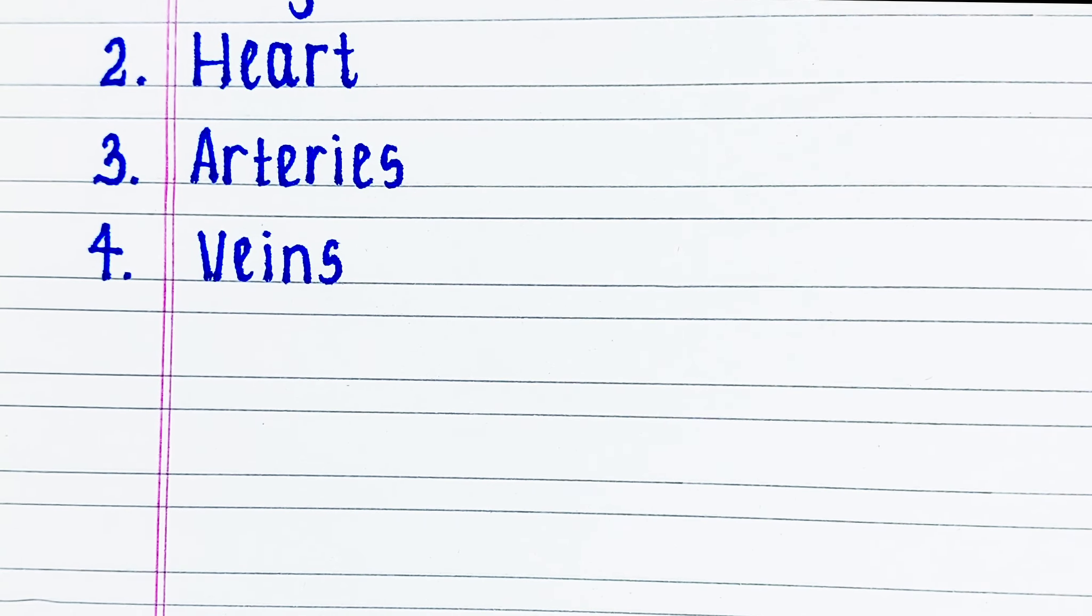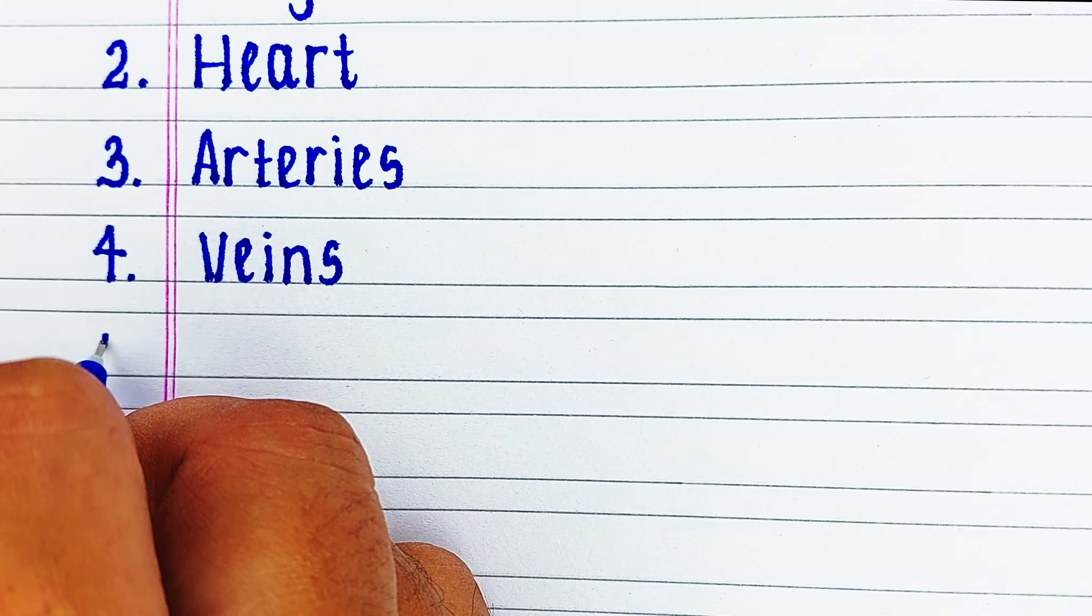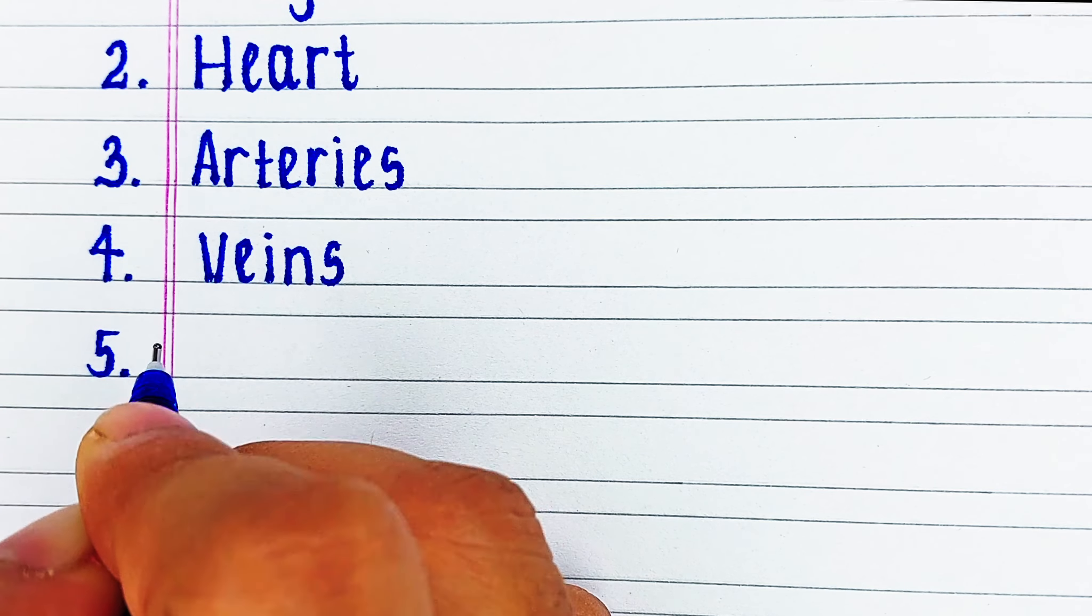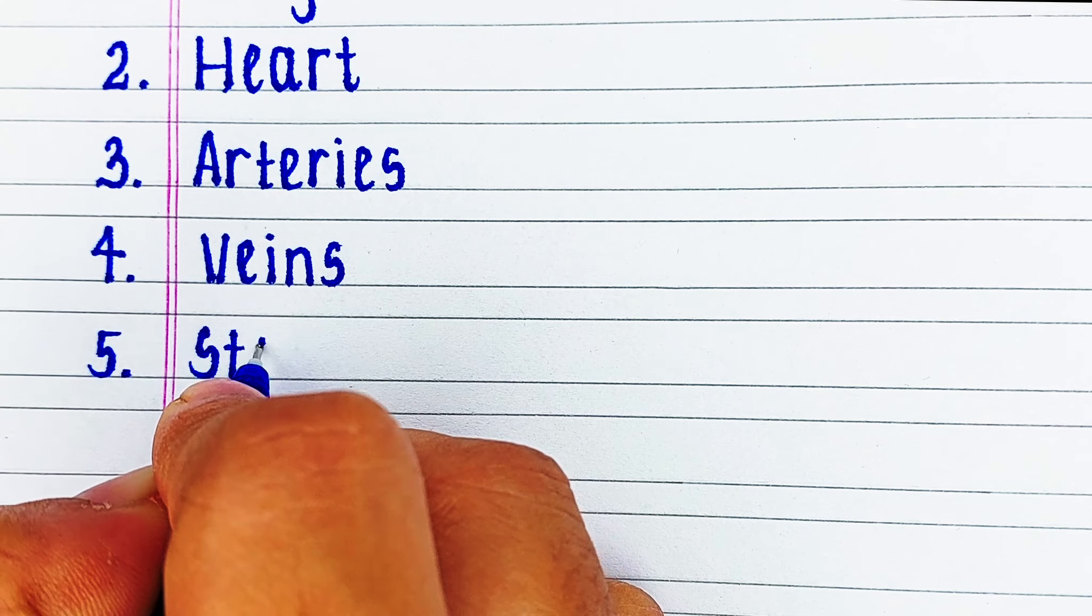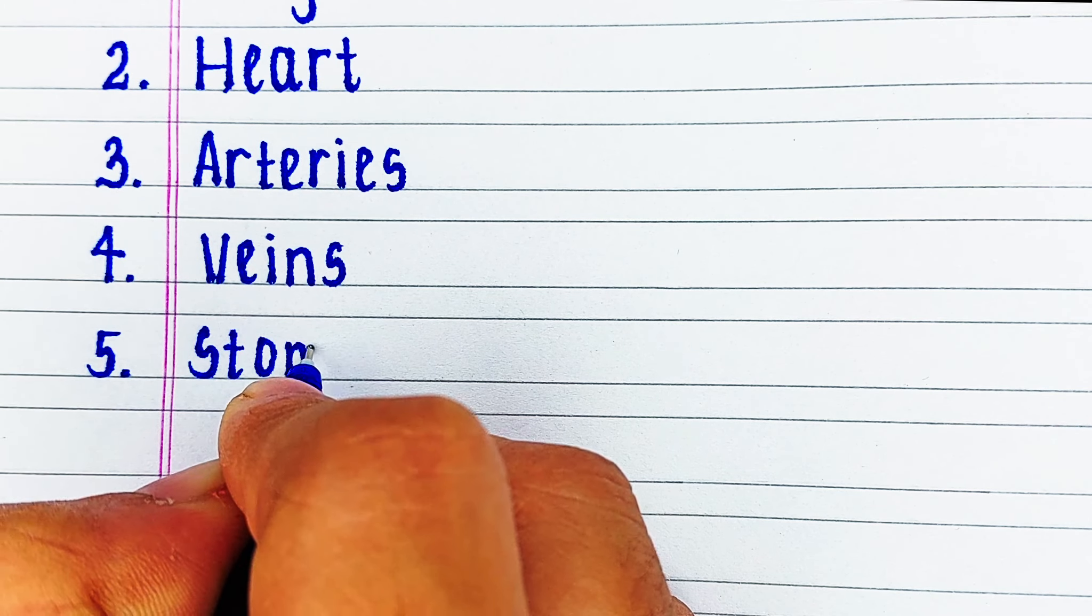Veins. Veins are the vessels that carry deoxygenated blood from other parts of the body to the heart.